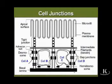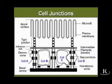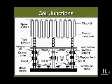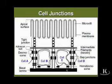A specialized form of a desmosome is a hemidesmosome. The job of a hemidesmosome is to keep the corresponding epithelial cell closely anchored to an underlying basement membrane or basal lamina.